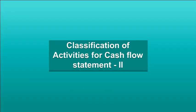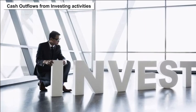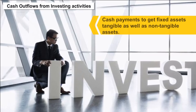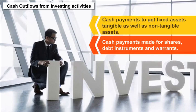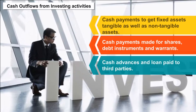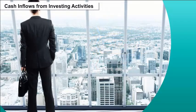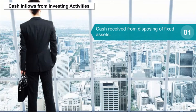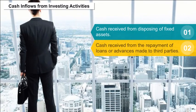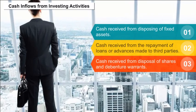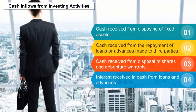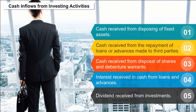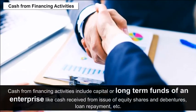Cash outflows from investing activities include: cash payments to acquire fixed assets (tangible as well as intangible), cash payments made for shares, debt instruments and warrants, and cash advances and loan payments to third parties. Cash inflows from investing activities include: cash received from disposing of fixed assets, cash received from repayment of loans or advances made to third parties, cash received from disposal of shares and debenture warrants, interest received in cash from loans and advances, and dividend received from investments.